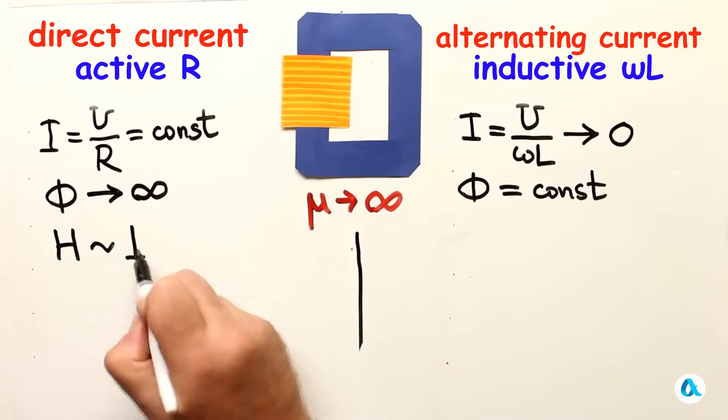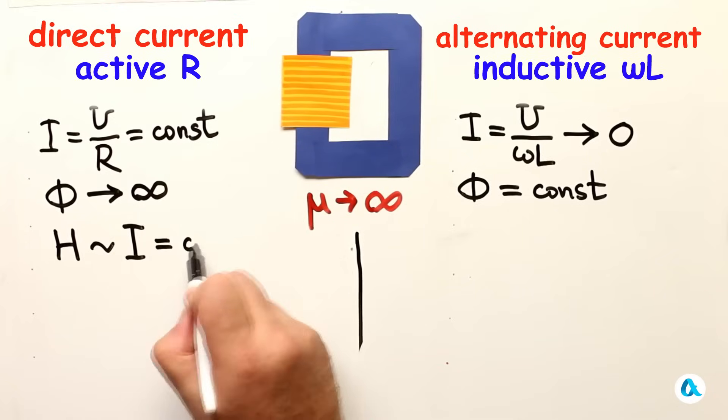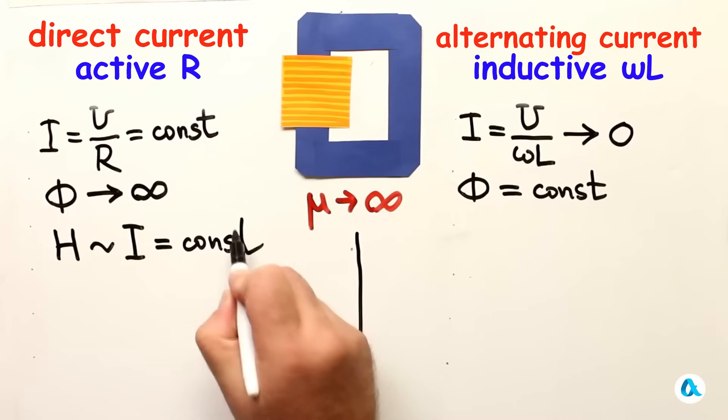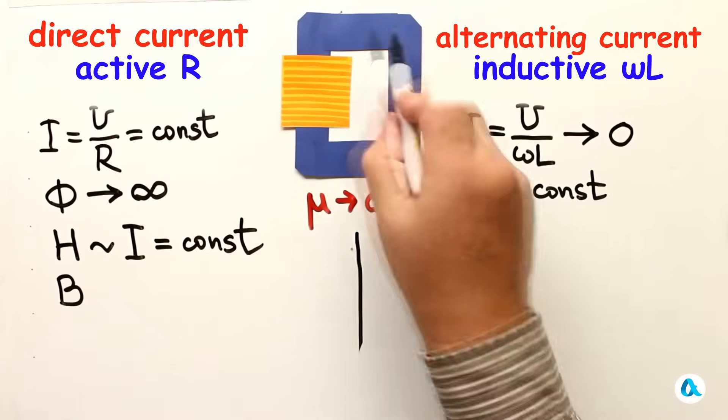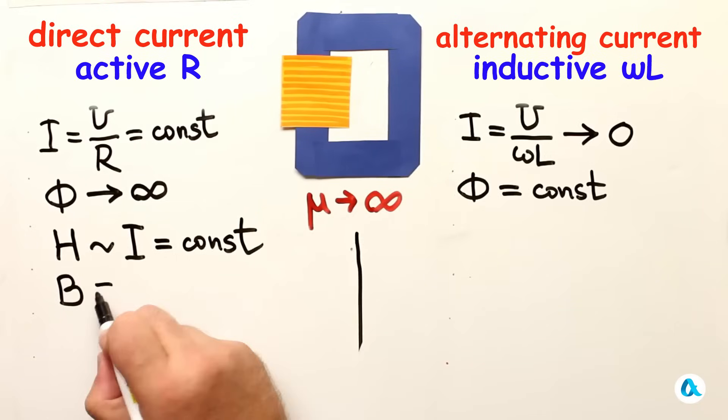I will write out the field H, which is defined by currents but is proportional to them. It does not depend on mu at all. I write here a constant. As for the magnetic field B inside the core, it is basically μH. If mu tends to infinity, then B essentially tends to infinity.